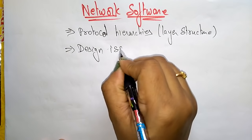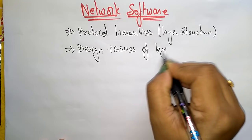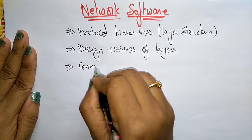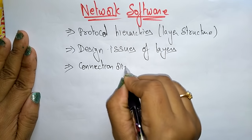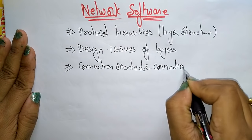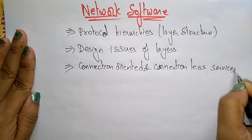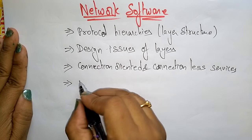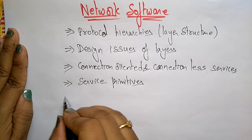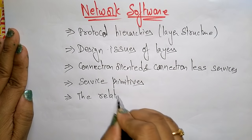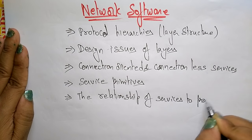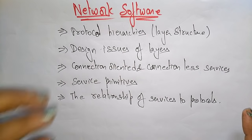The network software also has to determine whether it is connection-oriented or connectionless service between the layers. Additionally, it checks the service primitives — the service operations between the layers.